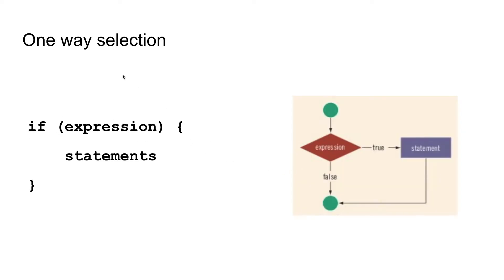The first if-else statement is one-way selection. One-way selection comes into some expression and tests that expression. If the expression is true, it will perform some set of statements and then move on to the rest of the program. If it is false, it will not perform any specific set of statements and will continue from the same point that the true case continues from.